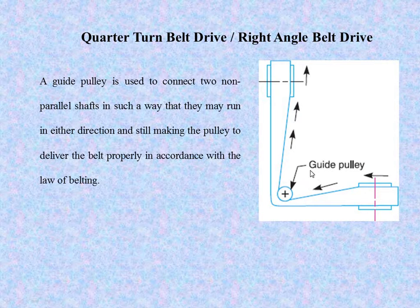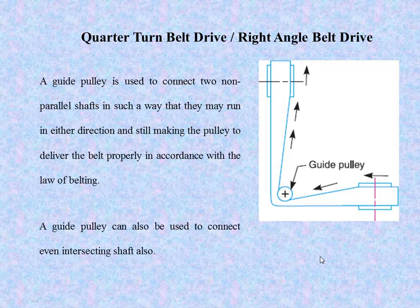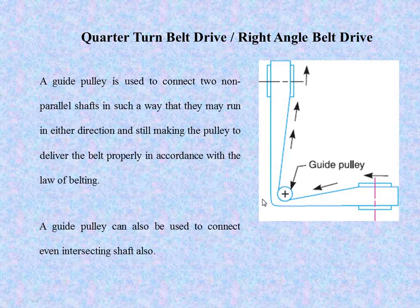These two are the non-parallel shafts. The guide pulley is used to connect these two shafts and transfer power from one shaft to another, fulfilling the requirement of the law of belting. A guide pulley can also be used to connect intersecting shafts — so it is used for both non-parallel and intersecting shafts.